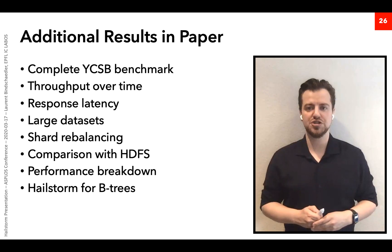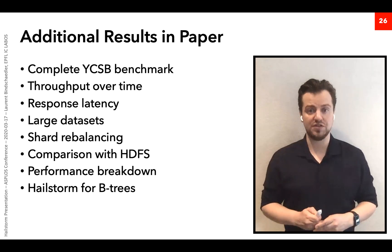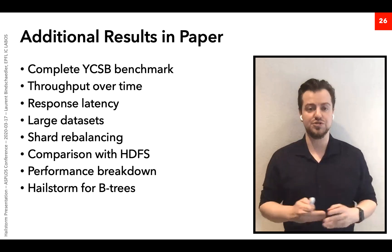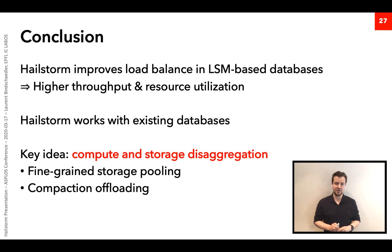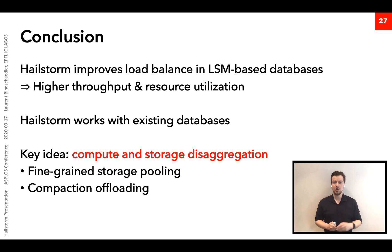This was a short overview of the main results. The paper itself includes many more results and details. To conclude, Hailstorm is a distributed system that improves load balance in LSM-based distributed databases, achieving higher throughput and resource utilization while requiring only minimal changes to existing databases. The key idea is compute and storage disaggregation through two techniques: fine-grained storage pooling to scale storage, and compaction offloading to scale compute.